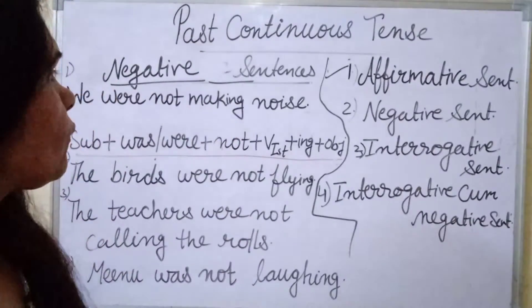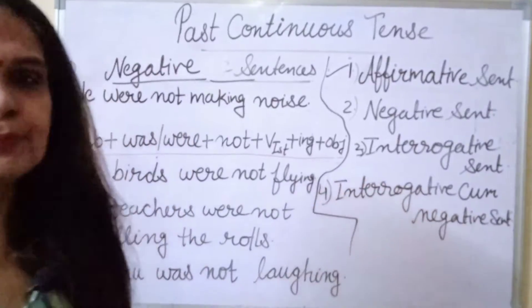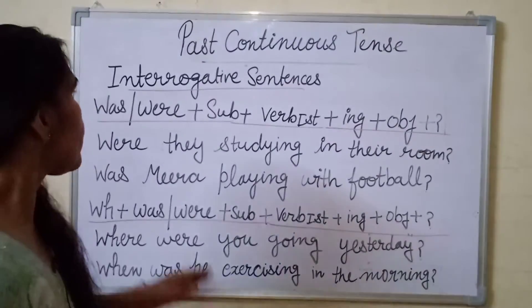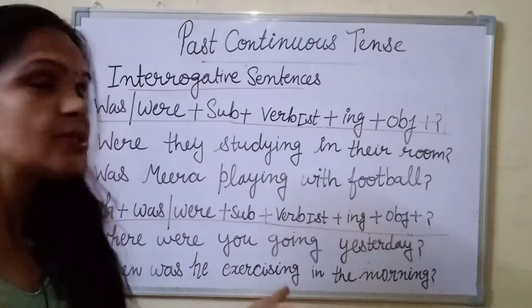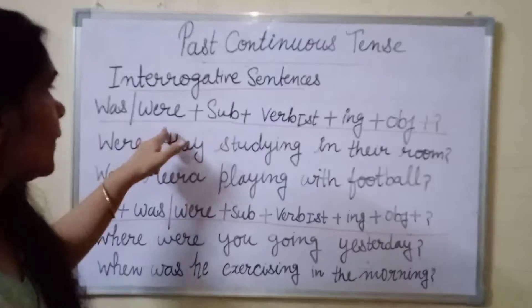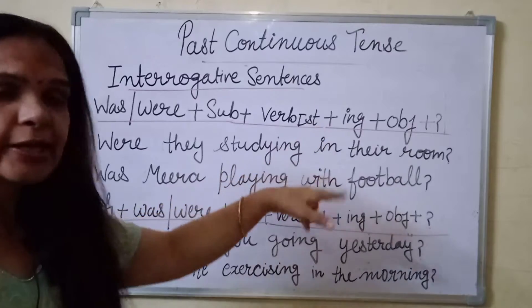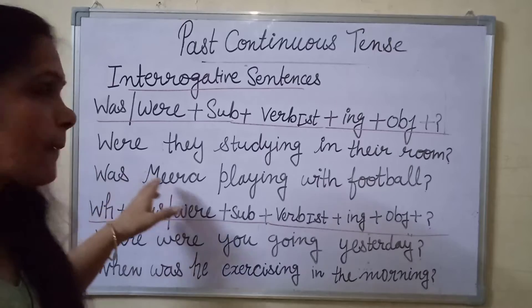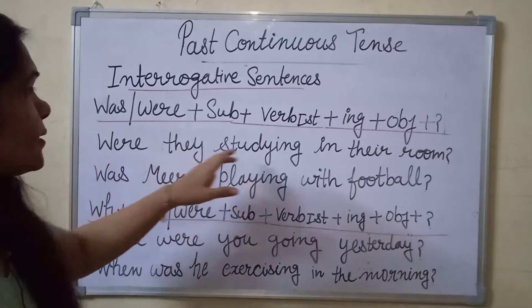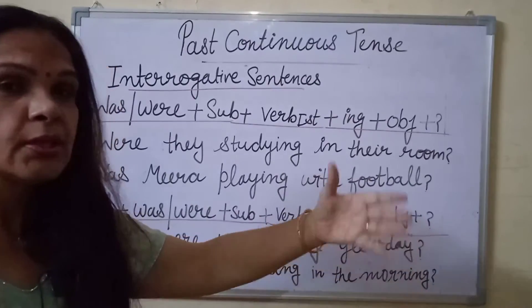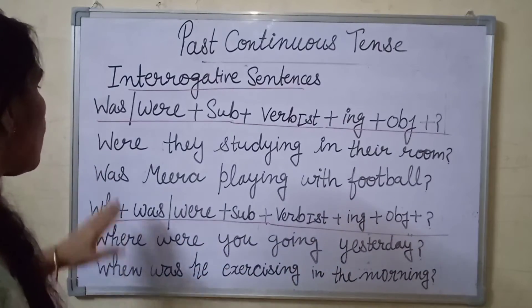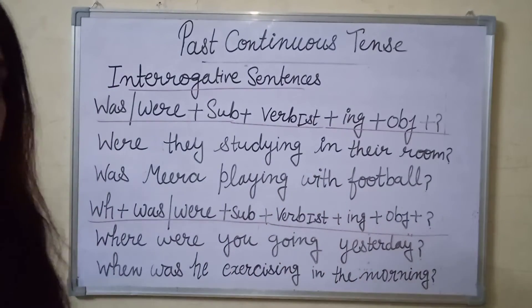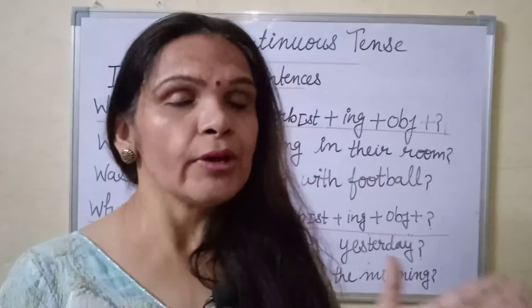Now we will do interrogative sentences. The structure is: Was/Were + Subject + verb's first form + ing + object + question mark. For example: Were they studying in their room? Was Meera playing with football?